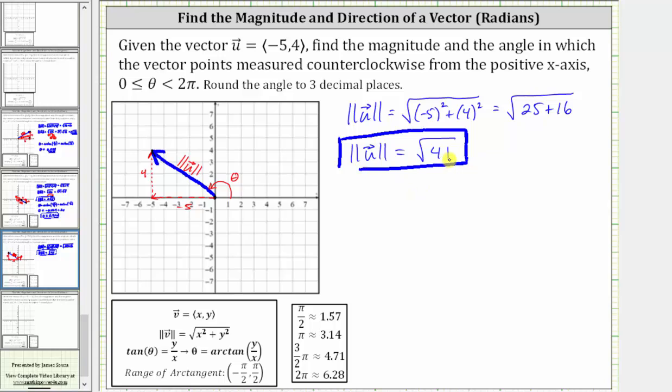And now let's determine the direction of vector u, which is angle theta. Theta is equal to arctangent of the ratio of the opposite side to the adjacent side, or y divided by x, which gives us four divided by negative five or negative four fifths. And now we go to the calculator.